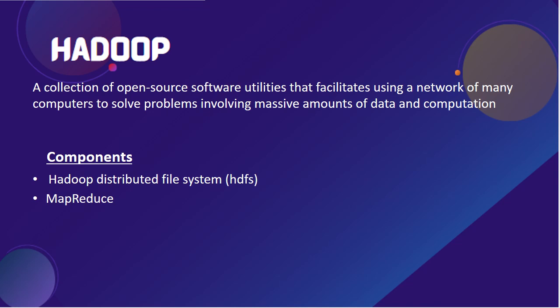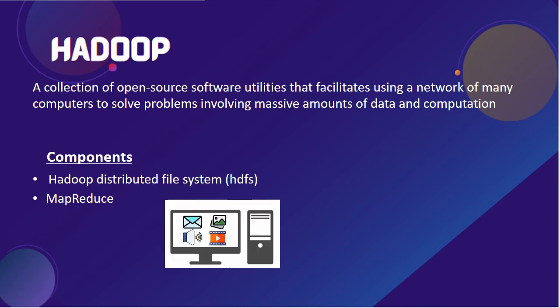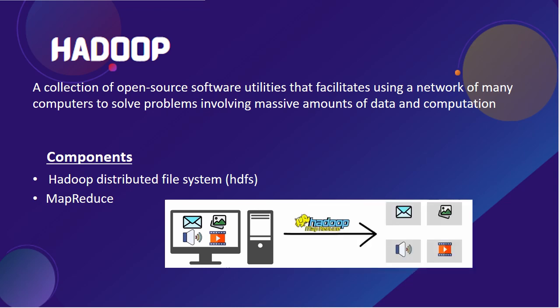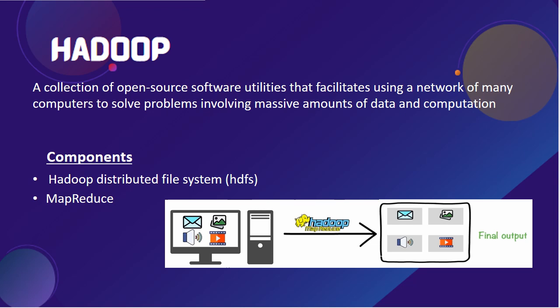The second component is MapReduce. After storing the data, it needs to be processed. In a traditional data storing method, an entire dataset is processed in a single machine processor, hence it consumes a lot of time. But with the help of MapReduce, it splits data into parts and processes each part separately on different data nodes. The individual results are then aggregated to give the final output.